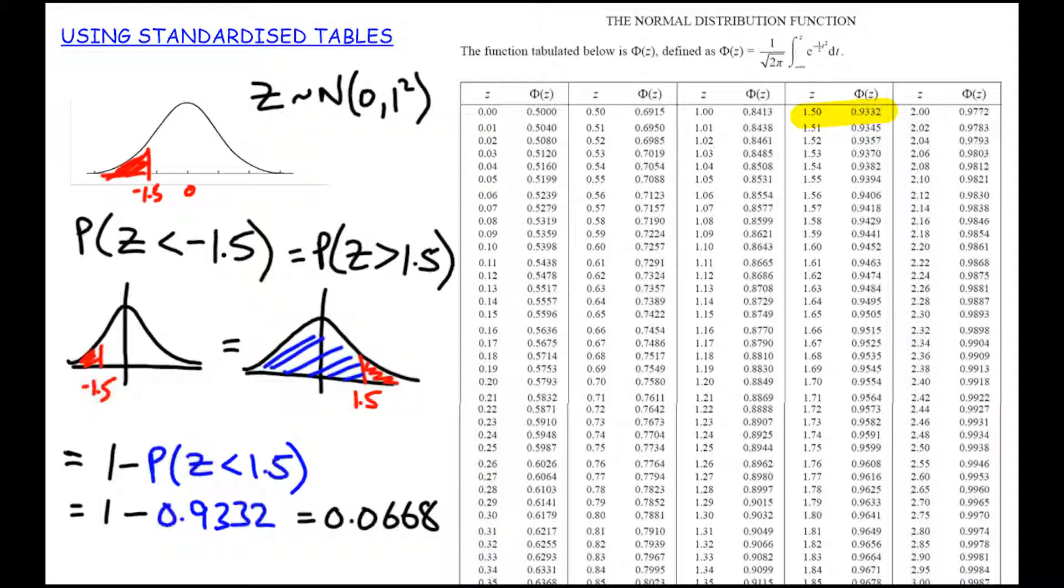Leaving us with an answer of 0.0668. So two ways that we used those previous properties of a normal distribution. We can use the symmetry and we can use the fact that all of the probabilities should add up to 1, or the total area underneath the curve is 1, to then go ahead and solve a variety of different probability statements.